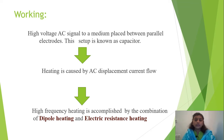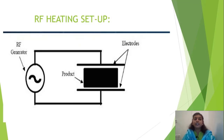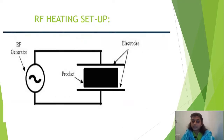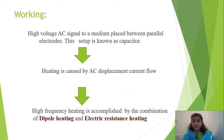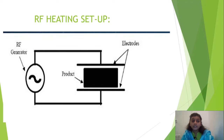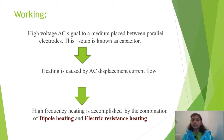How does it actually work? First, looking at the RF heating setup: there is a generator and electrodes, and the product is placed between the electrodes. A high-voltage AC signal is applied to a medium placed between parallel electrodes. This setup is known as a capacitor — energy is already stored there. The heating is caused by AC displacement current flow; when the current is supplied from the generator, the electric energy is converted to heat.